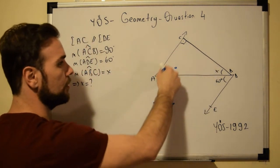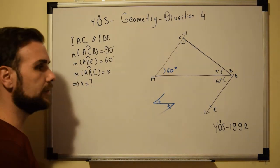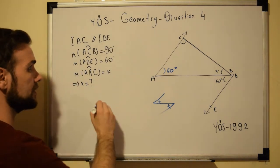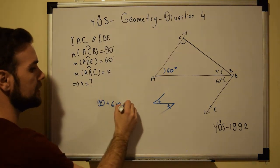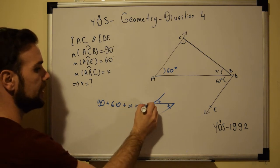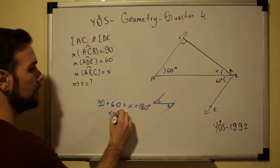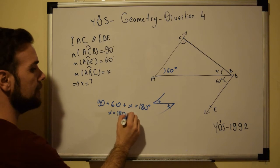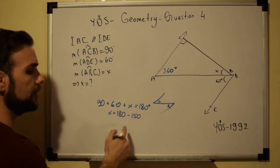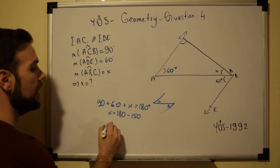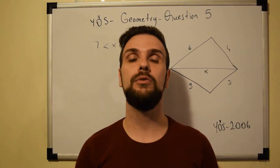The rest is easy because we already have two angles. So we have 90 + 60 + X = 180 degrees. Therefore X = 180 - 150, which gives us X = 30 degrees.